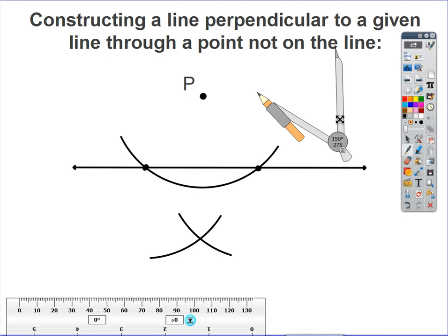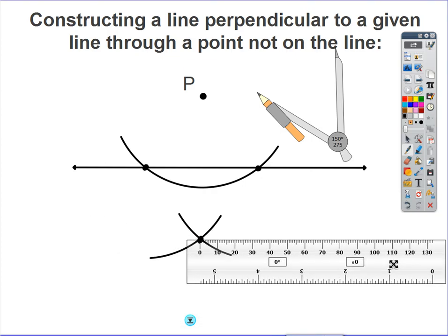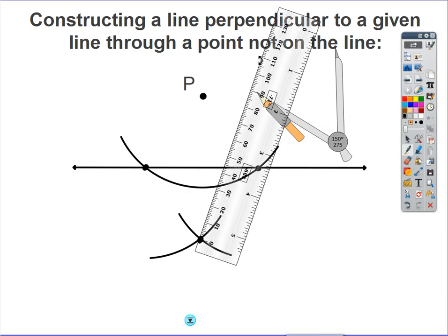Now, with your straight edge, you should be able to draw a line from point P passing through the intersection of the two smaller arcs that we just created. So I'm going to take my straight edge here, and I might want to put one end right here and then rotate it. Rotate it up to the other point.